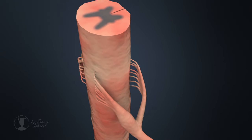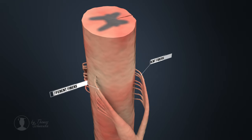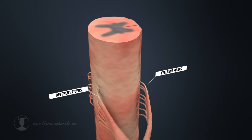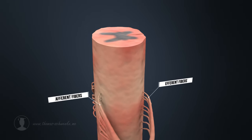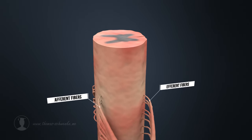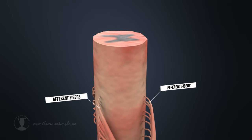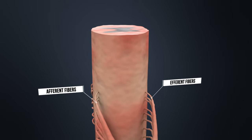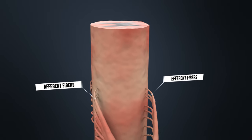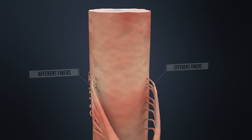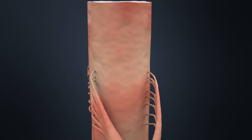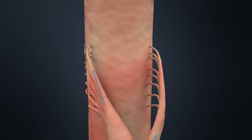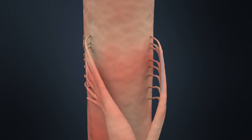The spinal nerves of the peripheral nervous system lead into the spinal cord, whereby the spinal nerve is divided into afferent and efferent fibers. The afferent nerve fibers conduct nerve impulses from the sensory receptors to the central nervous system, while efferent nerve fibers carry impulses to effector organs, mainly muscles and glands.